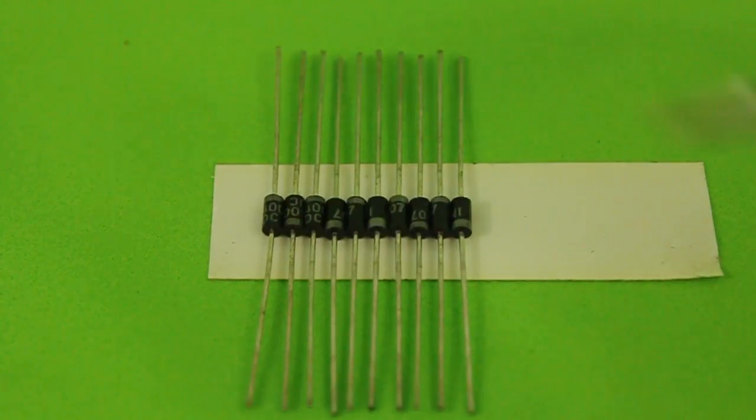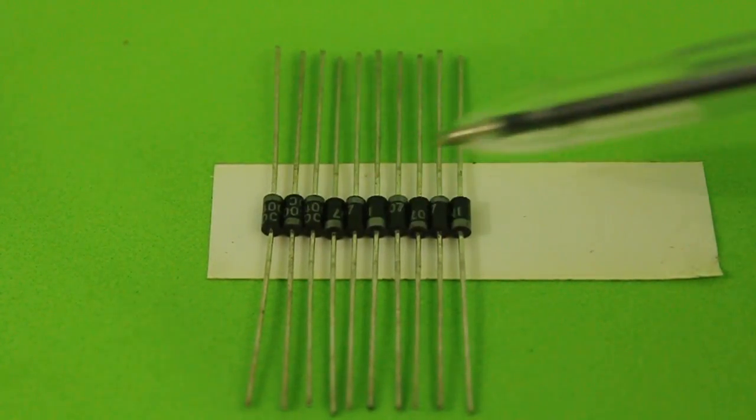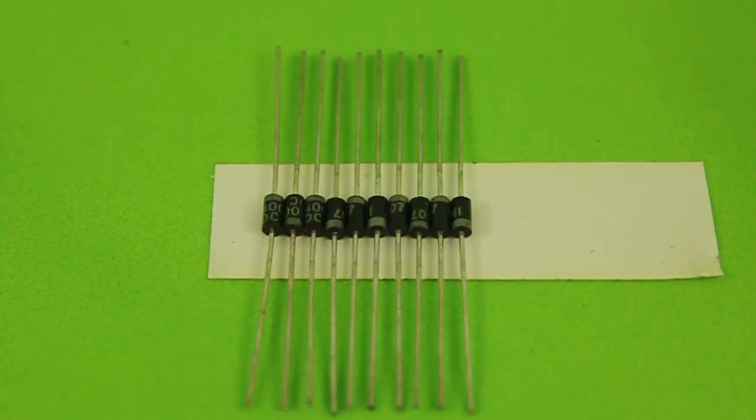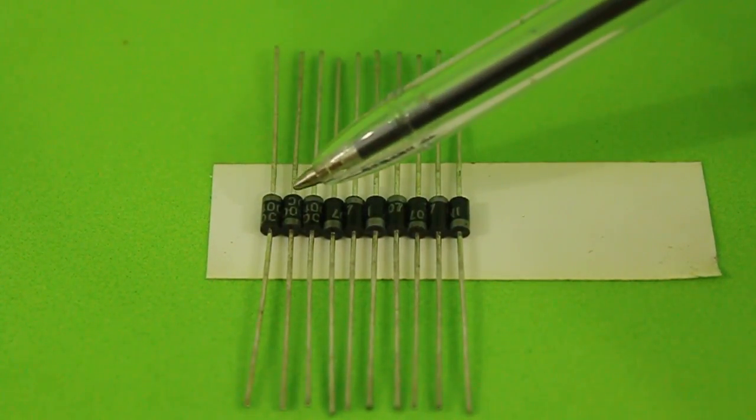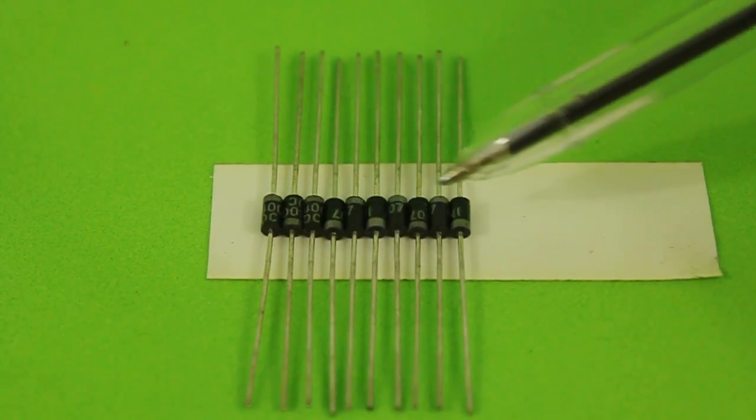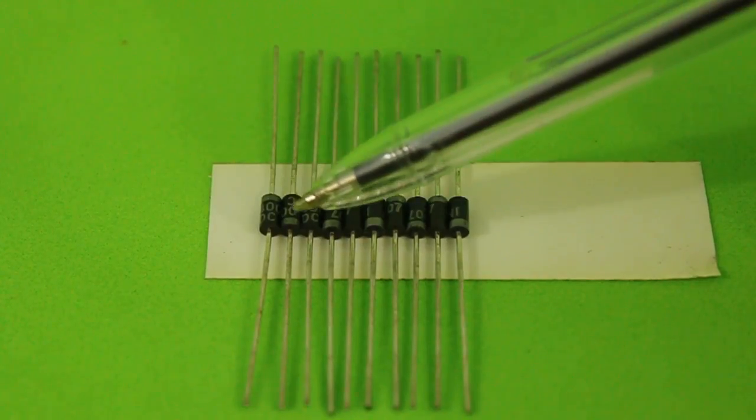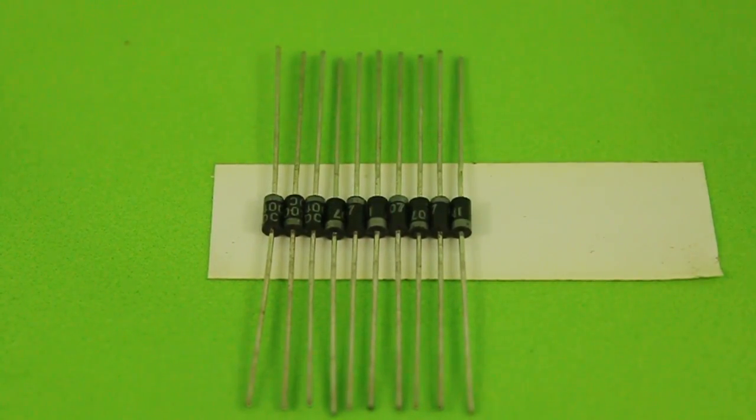The first step is to lay the diodes over a piece of electrical tape so that they don't move. The polarities have to be negative, positive, negative, positive, etc. And then apply epoxy glue to join the diodes together.